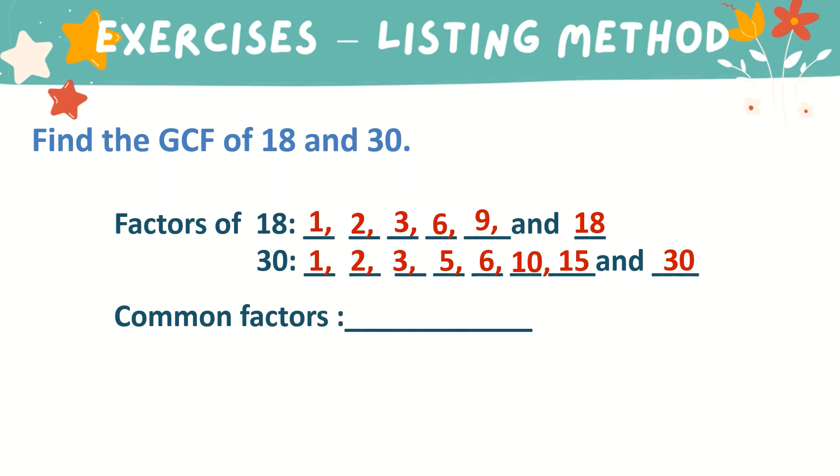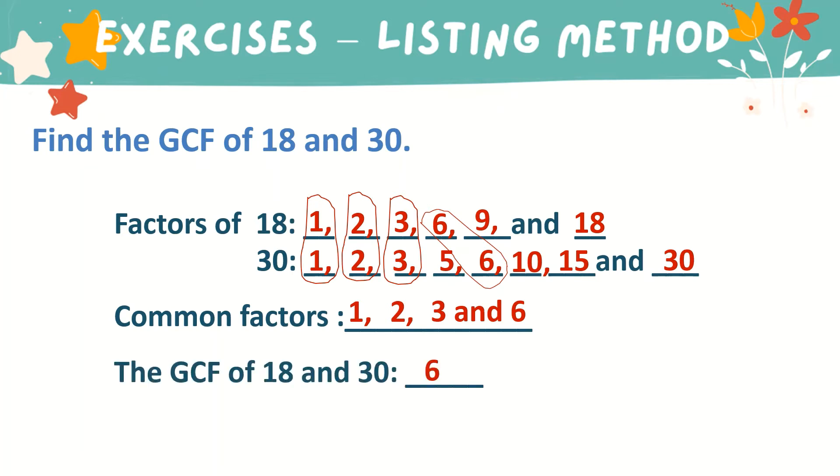The common factors of 18 and 30 are the following: 1, 2, 3, and 6. Among the common factors, we have the GCF or the greatest, which is 6.